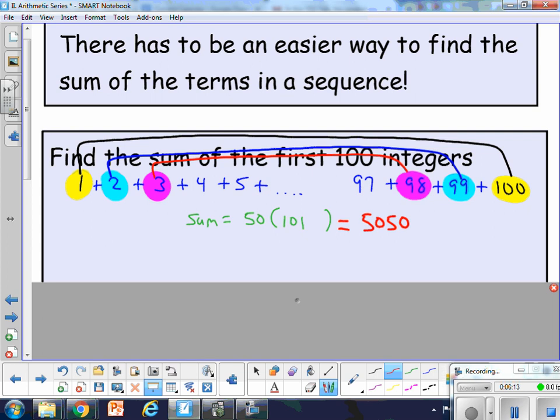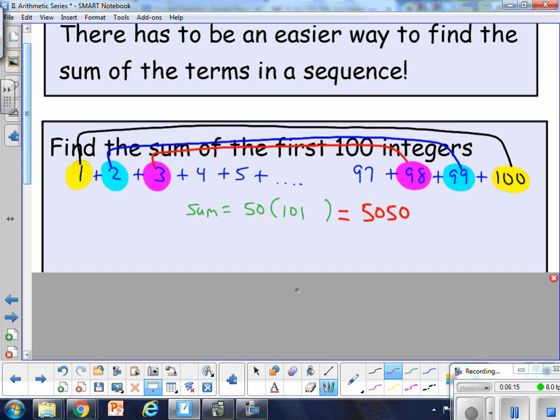So what he realized was the formula to get the sum of the terms here, the first n terms, it will always be, so this 50, remember we had 100 terms. We divided that by 2. So it's always going to be n over 2.